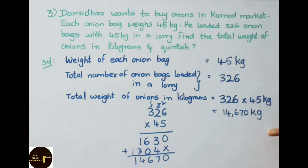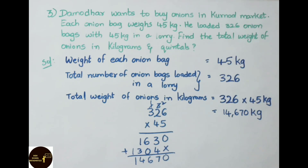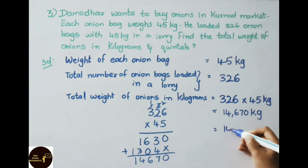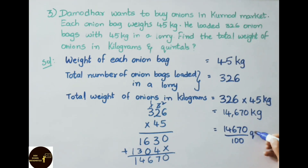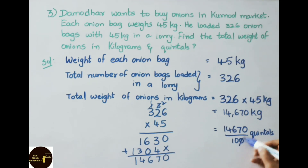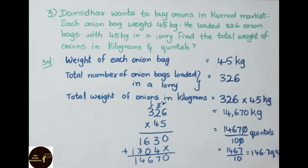Now we shall convert this weight into quintals. One quintal equals 100 kg, so we divide 14,670 by 100. Cancelling the two zeros, we get 1467 divided by 10, which equals 146.7 quintals.